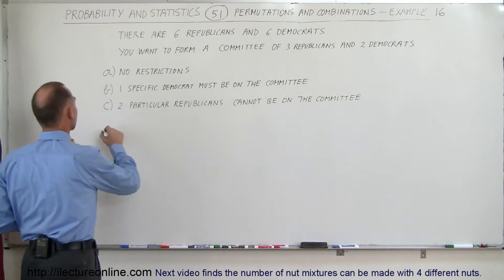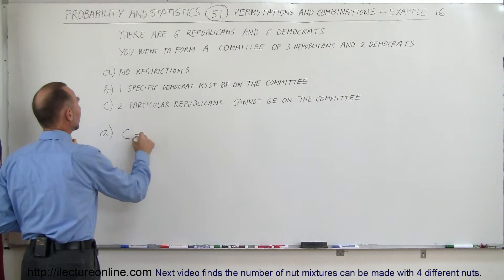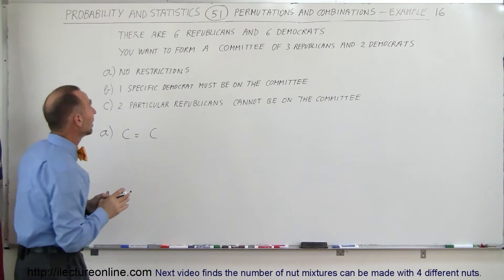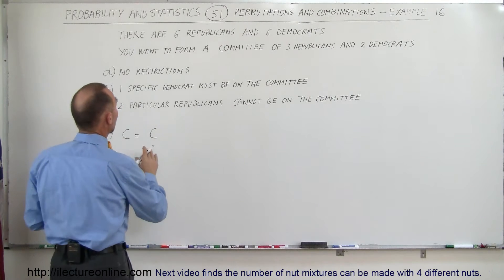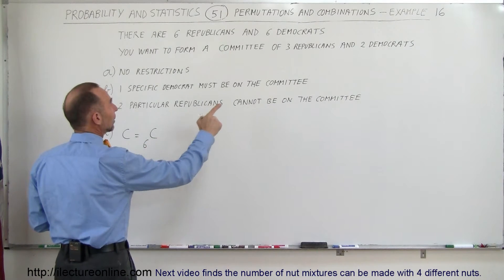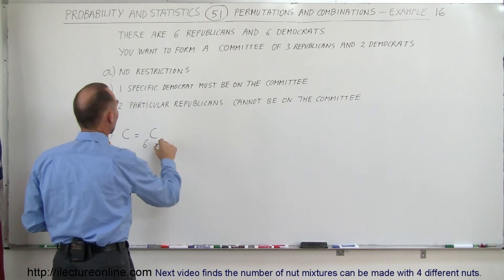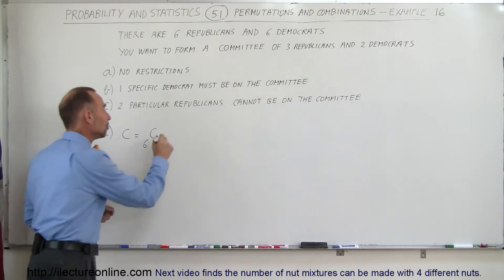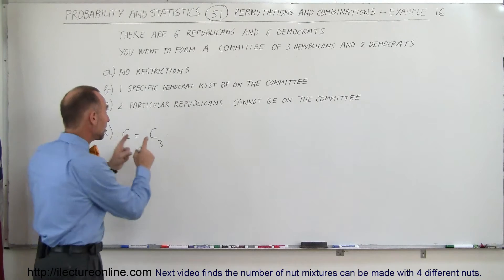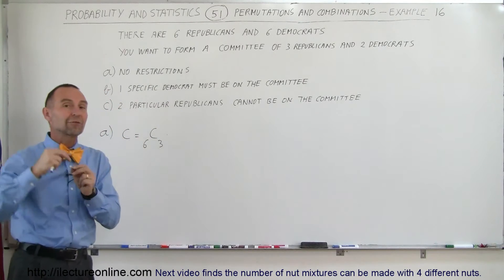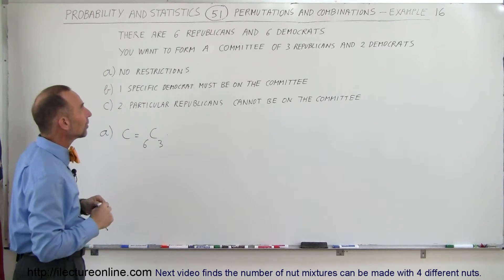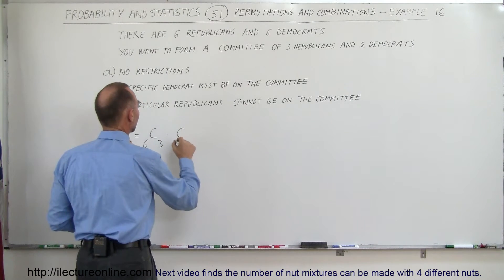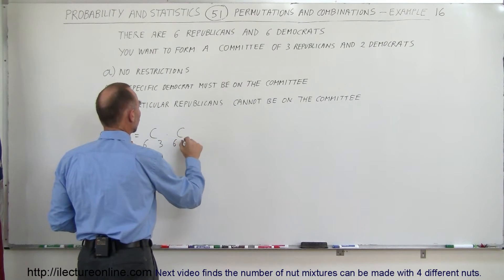For Part A, the total number of combinations is equal to the combinations you can have with the number of Republicans. You have six Republicans and you want three on the committee, so that would be C(6,3). You multiply that by the combinations of Democrats — there are six Democrats and two will be chosen — so times C(6,2).